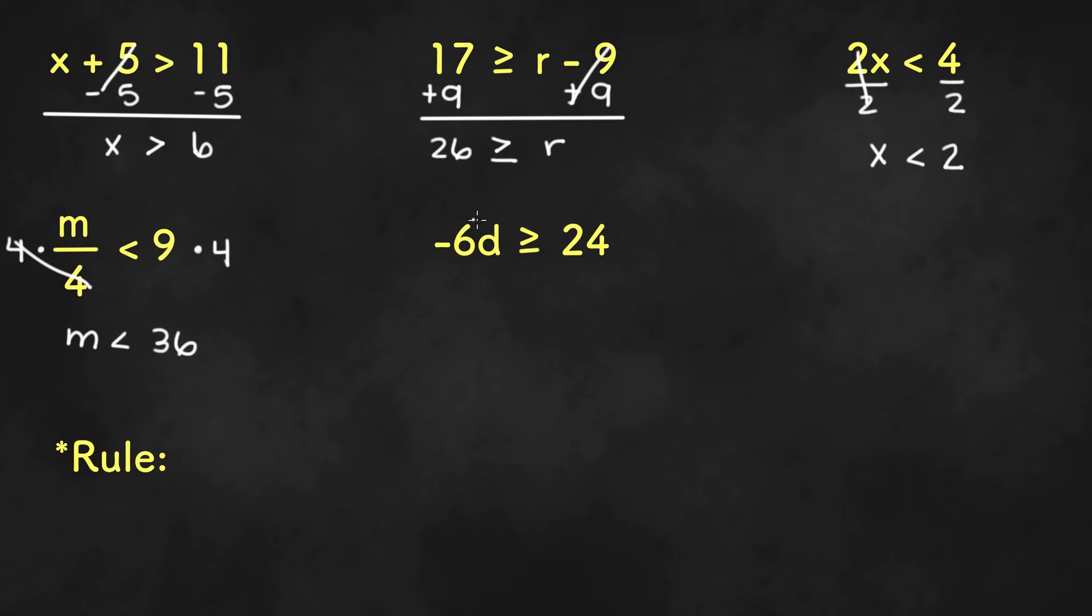Now this example, we'll go through the exception. Here we have negative 6d is greater than or equal to 24. Right here we had a similar problem just without a negative in front. So the rule is when you multiply or divide both sides of an inequality